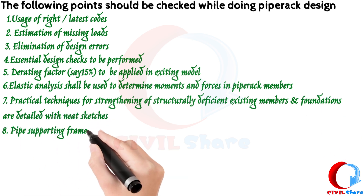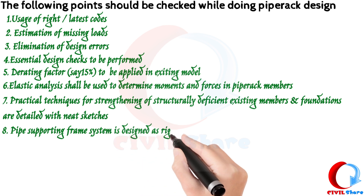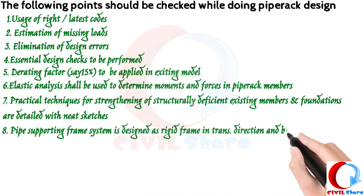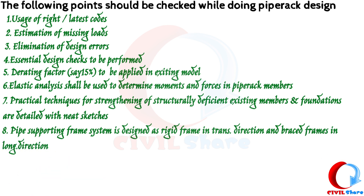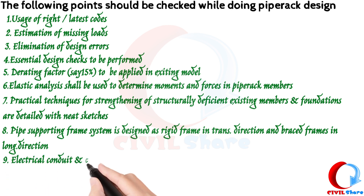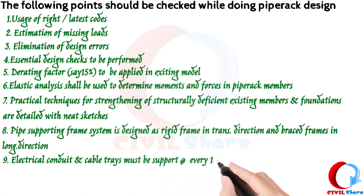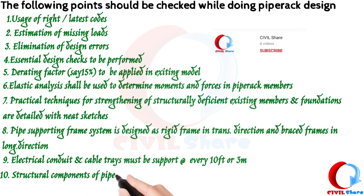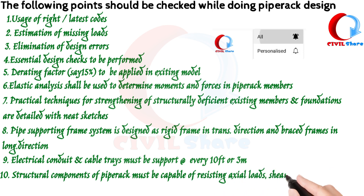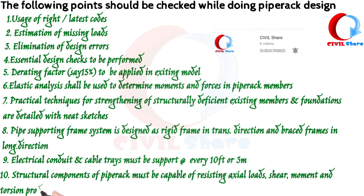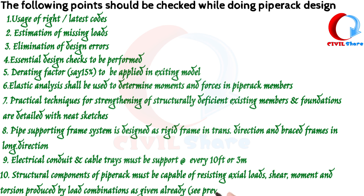8. Pipe supporting frame system is designed as a rigid frame in the transverse direction and braced frames in the longitudinal direction. 9. Electrical conduit and cable trays must be supported at every 10 feet or 3 meters. 10. Structural components of the pipe rack must be capable of resisting axial loads, shear, moment, and torsion produced by load combinations as given already — refer to part 2 video.